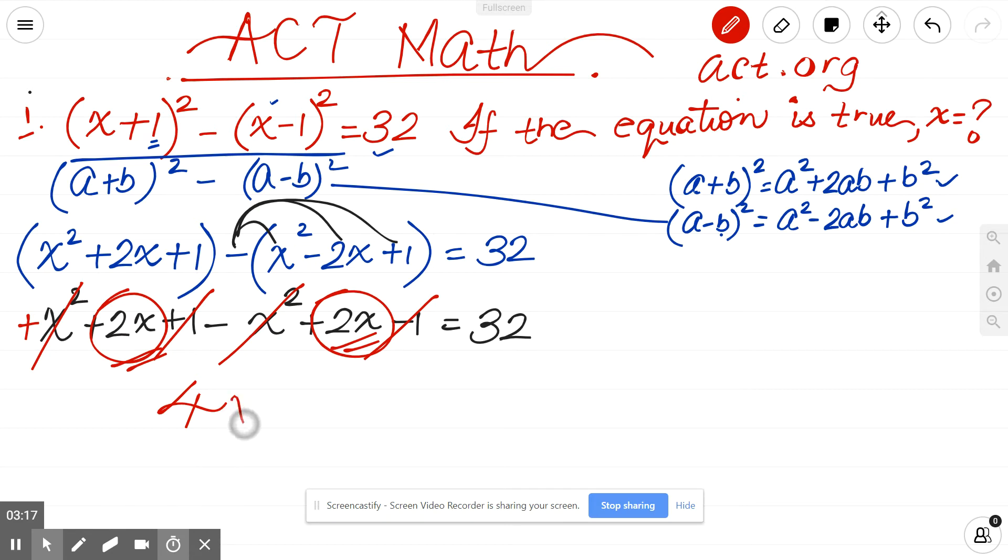2x, 2x, 4x equals 32. Now we have to solve for x. As the question said, we divide both sides by 4 and x equals 8.